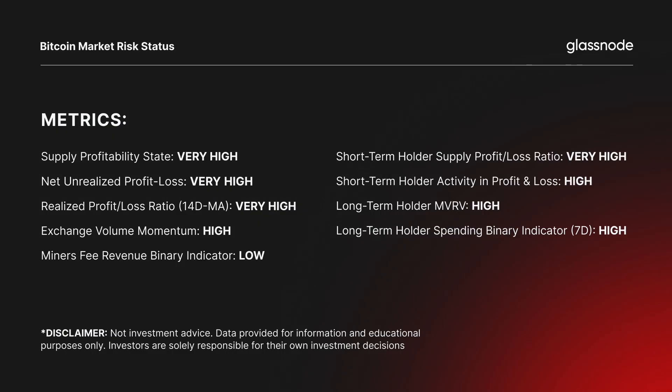Before we jump into some of the metrics, it's important to establish what we're really defining here as risk, and also how this framework should be thought of in regards to the decision-making process. The framework categorizes each metric into four levels: very high risk, high risk, low risk, and very low risk. If you want to understand how the parameters for each metric are defined, I'll leave a link to the original article below, which goes through each one and explains it in detail.